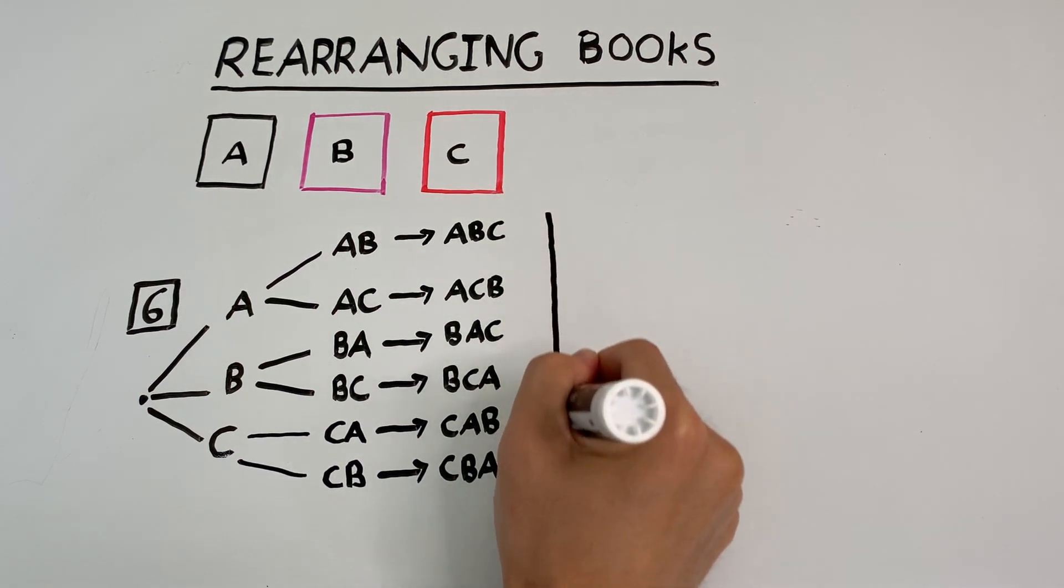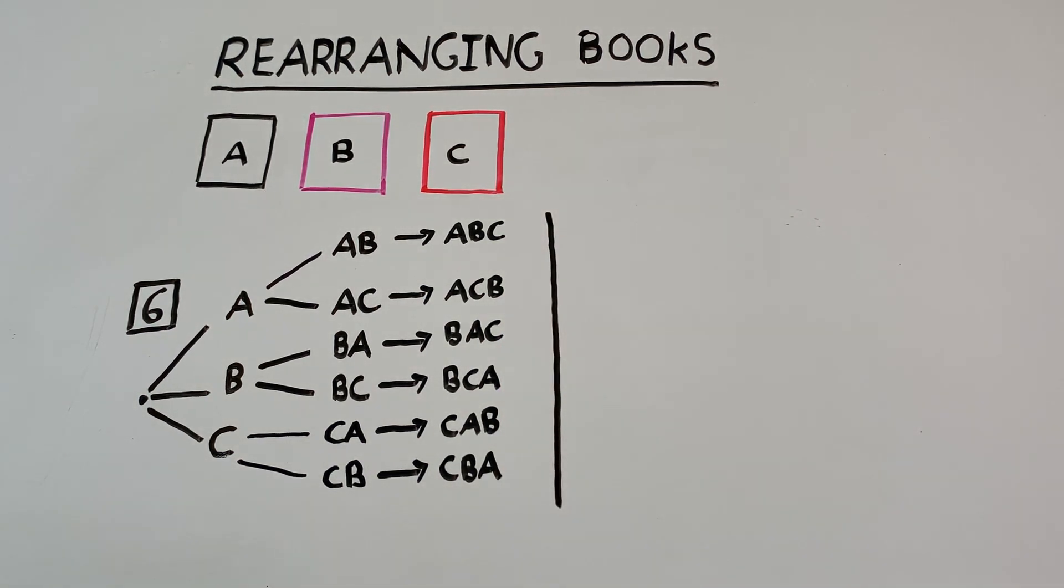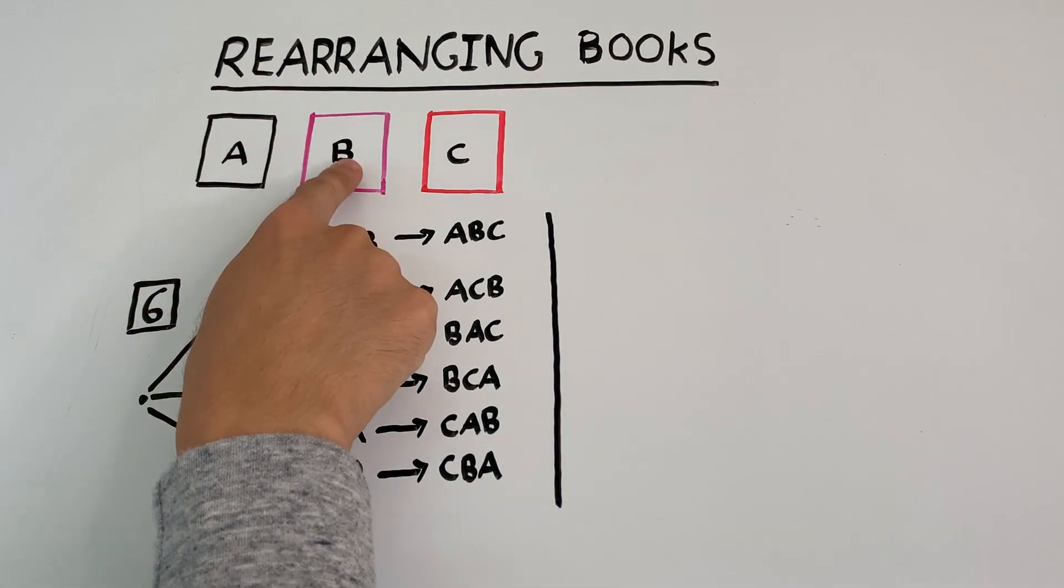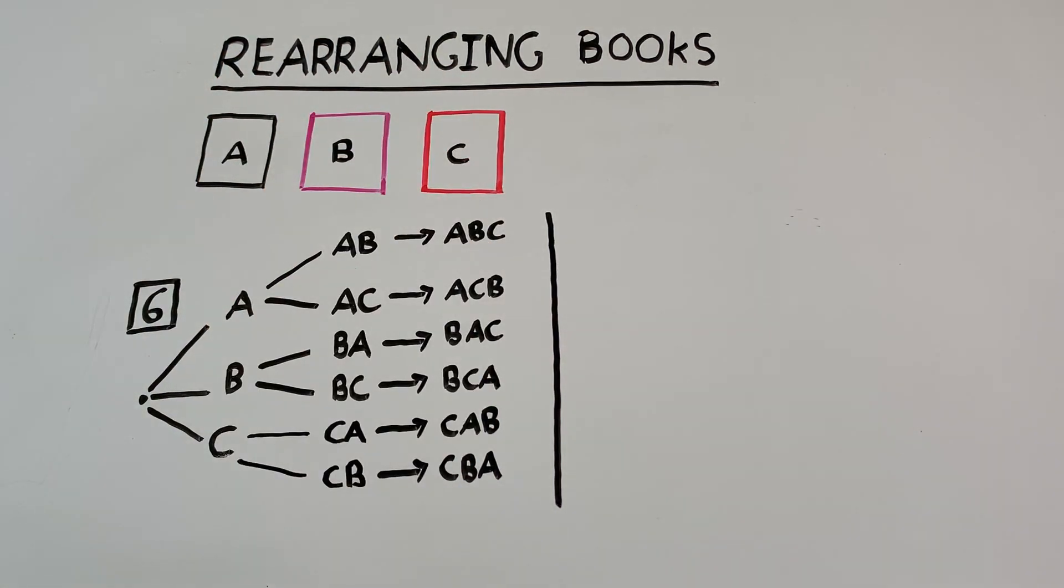And there is. So here, we're going to use a strategy that we've seen before. We're going to consider choices. So first, let's consider how many choices we have for the first book. Well, that's three choices. It could either be book A, book B, or book C that is placed first.